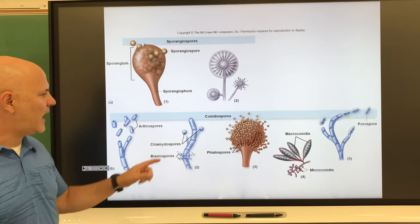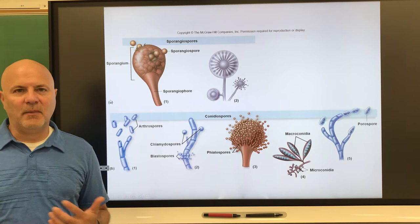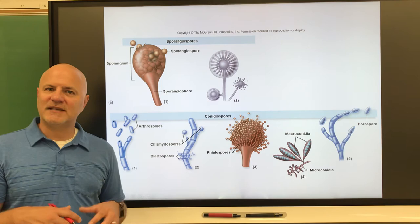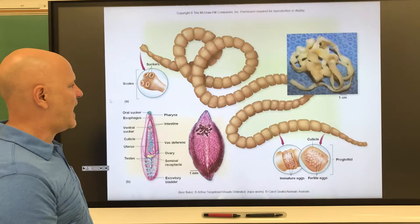Sexual spore formation occurs by the fusion of compatible hyphae, which combine and form a fruiting body. The fruiting body then produces spores — and that's actually what a mushroom is. When you see a mushroom, that's where the fungus is reproducing, producing spores underneath it.